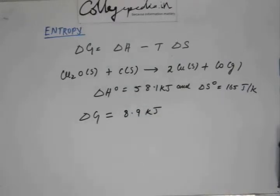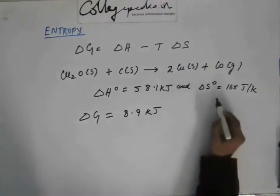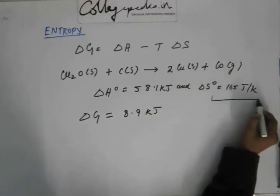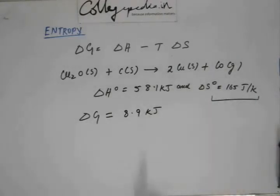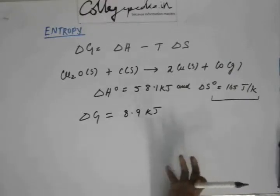So delta G is positive. This means that this reaction is not going to occur at room temperature. Because for the spontaneous reaction, delta G has to be negative, and this is coming out to be positive. That means this reaction is not spontaneous. Now, the question is like this. Now, as you can see, that delta S is positive. So if delta S is positive, then at higher temperature this reaction can be made to be spontaneous.